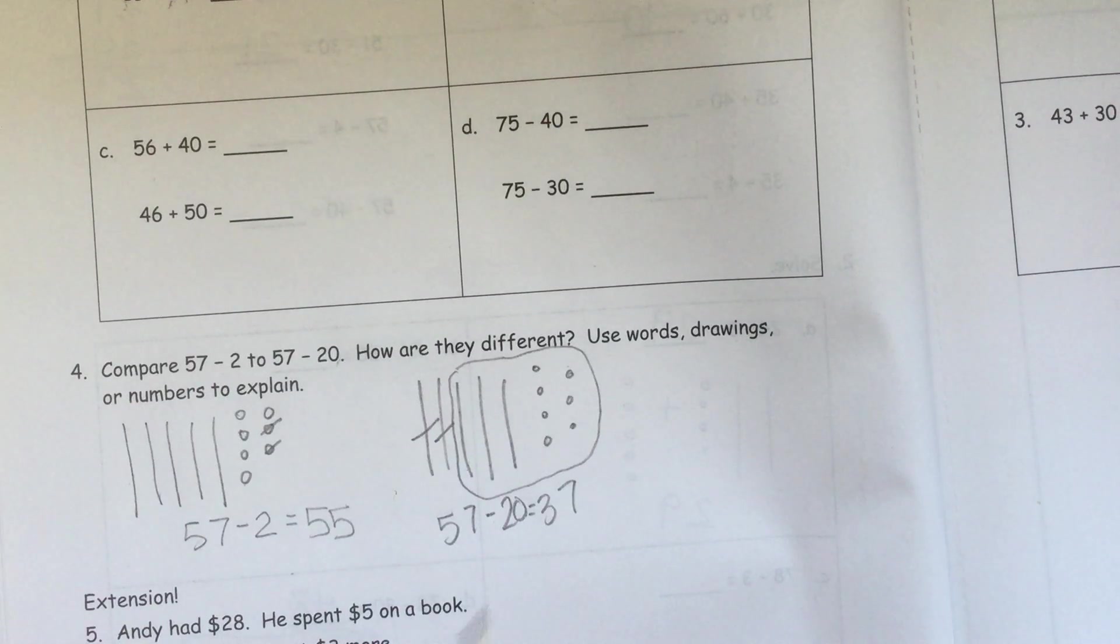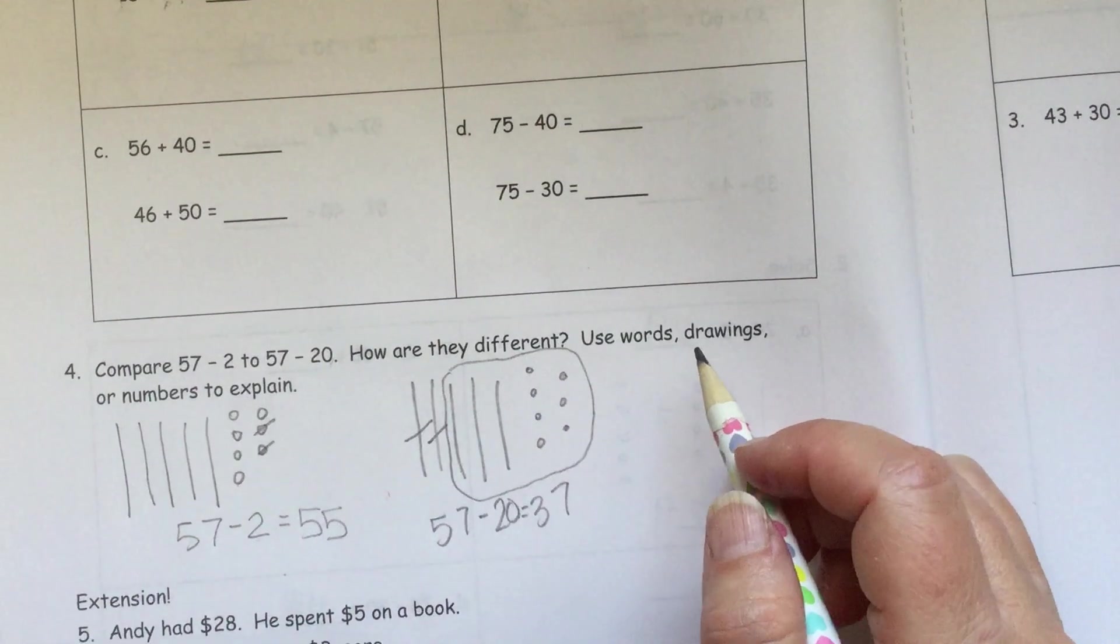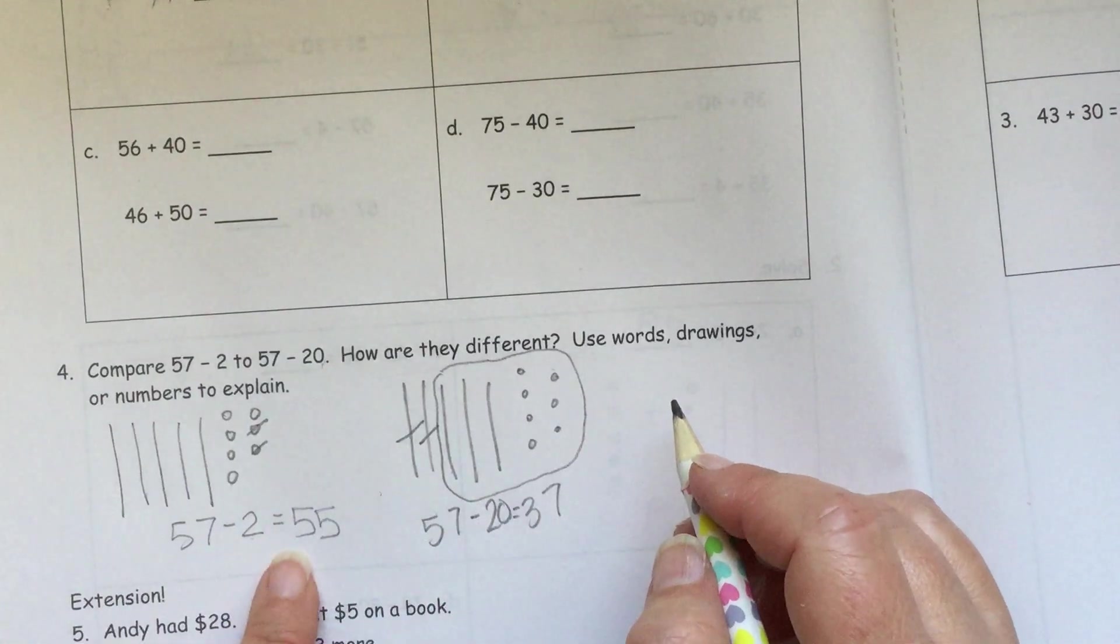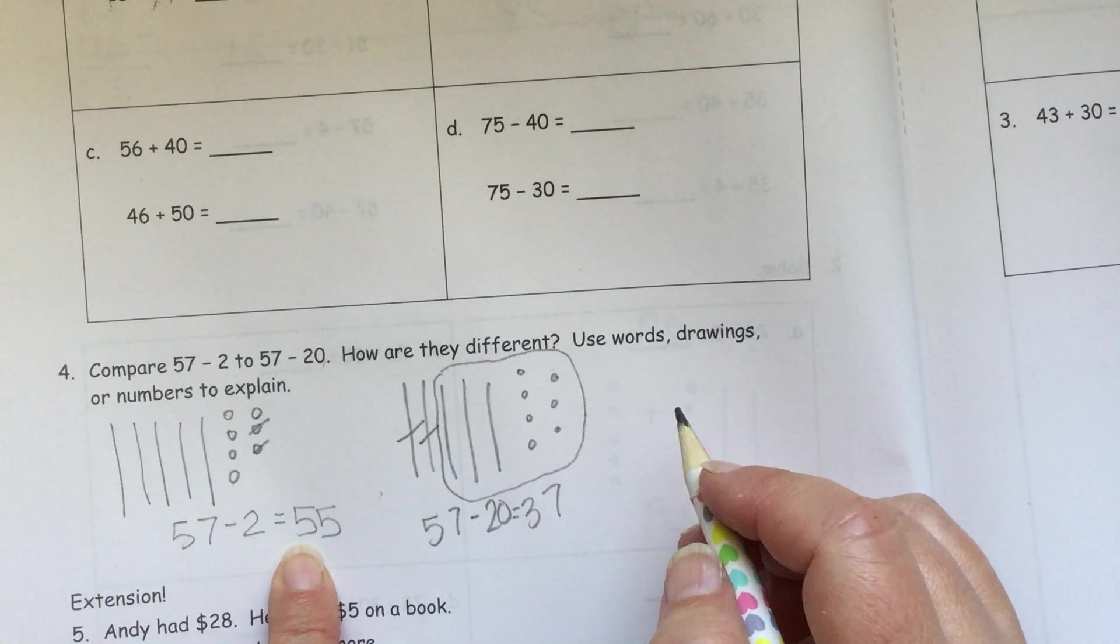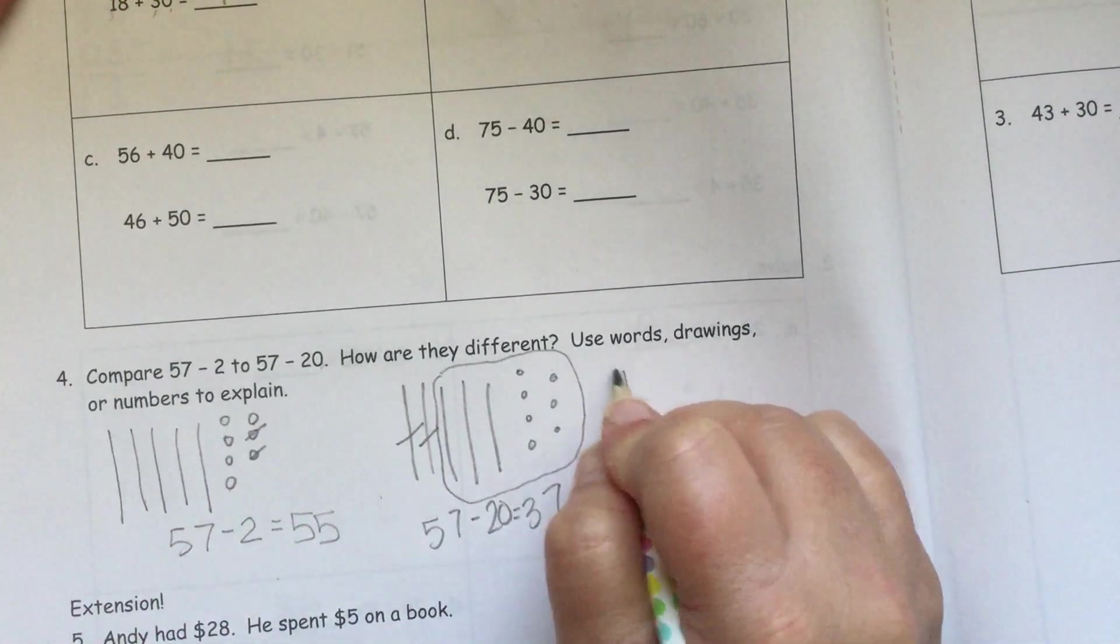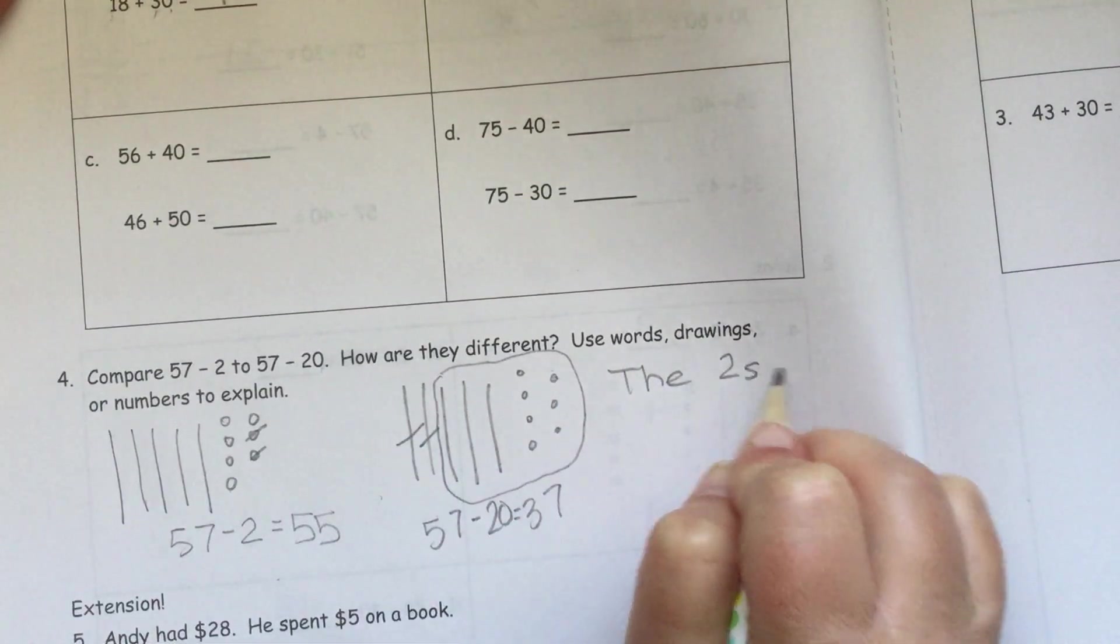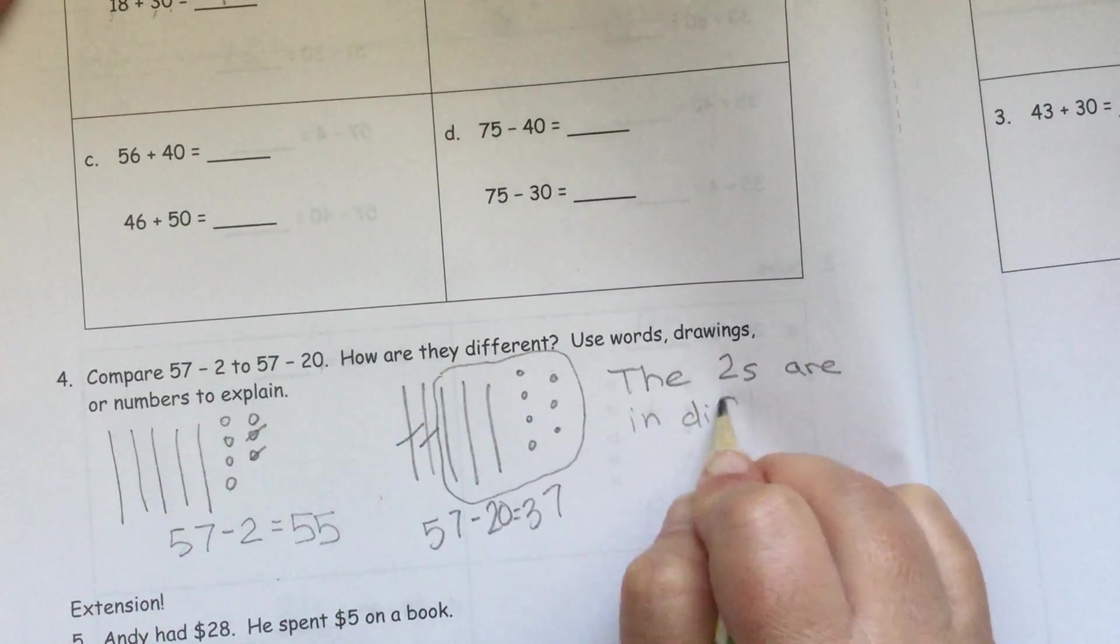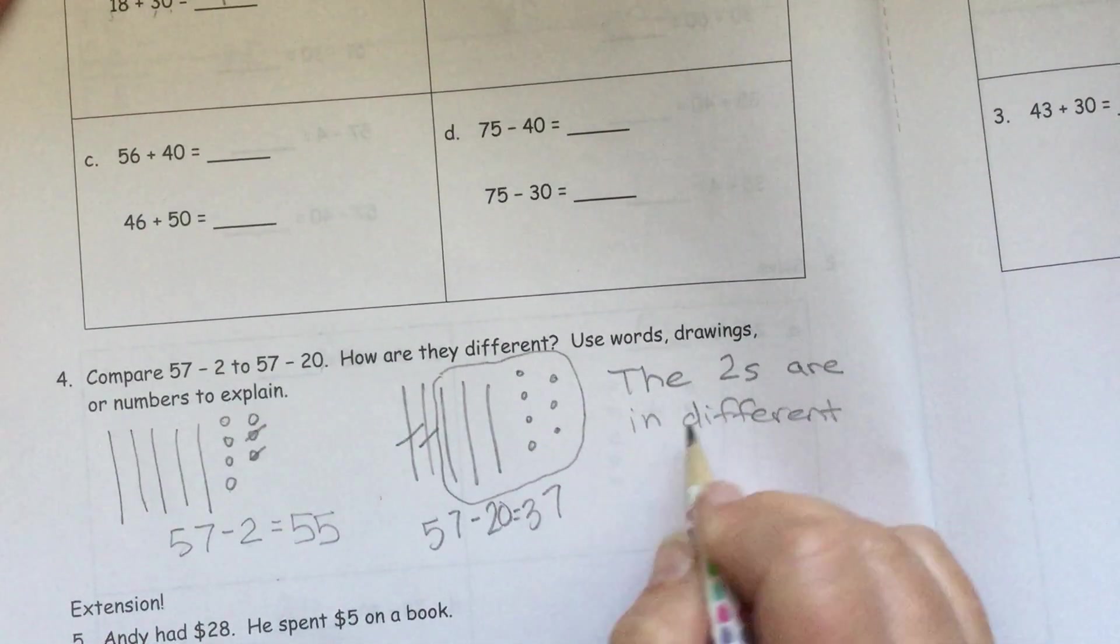So how are they different? Well, we see we still have similar numbers, right? We have a 2 here and a 2 there. But these 2s, are they in the same place? No. We have a 2 in the 1s place here, and we have a 2 in the 10s place here. So that makes a big difference because we can see we have 55 here as our answer. And we have 37 as our answer there. So we can say, the 2s are in different places.